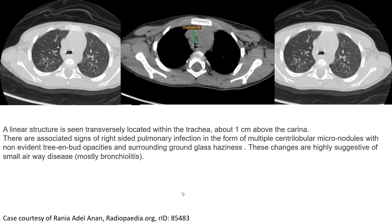Here is another case where a linear structure is intentionally located within the trachea about 1 cm above the carina, visible in the middle image, which represents a foreign body in the trachea. There are associated signs of right-sided pulmonary infection in the form of multiple centrilobular micronodules with non-cavitating tree-in-bud opacity and surrounding ground-glass haziness. These changes are highly suggestive of small airway disease, mostly bronchiolitis.